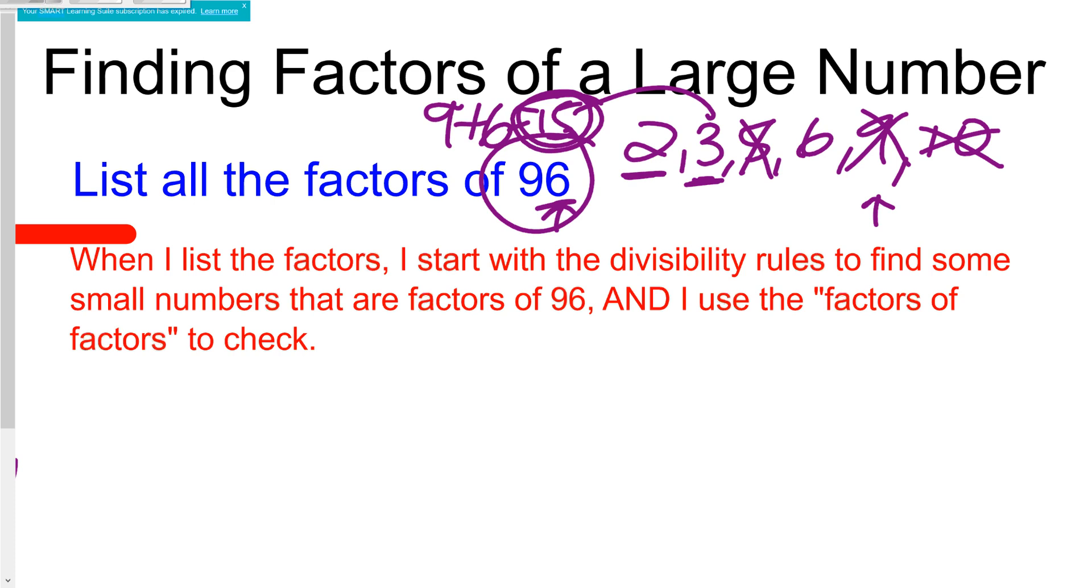Finally, the last rule I'm thinking of is the rule for 6. The rule for 6 is if it's 2 and 3 then it is 6. So now I know that 2, 3, and 6 are all factors of 96.